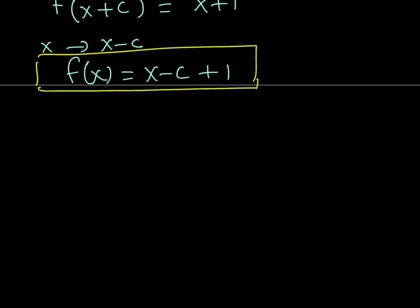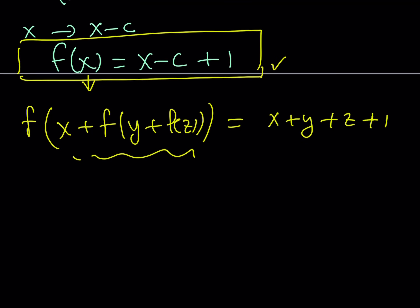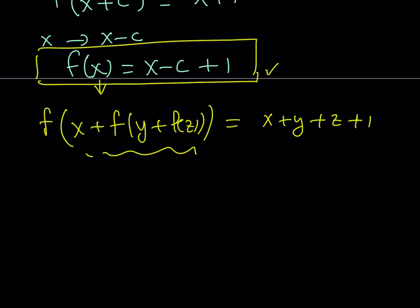Now let's go back to the original problem. We have f of x plus f of y plus f of z equals x plus y plus z plus 1. I'd like to use the definition of f of x and simplify this equation a bit more. Replacing f of x using our formula on the left hand side, we get x minus c plus 1. On the right hand side we get x plus f of y plus f of z, then minus c plus 1.